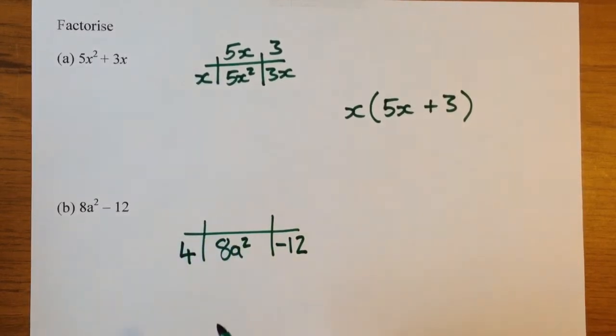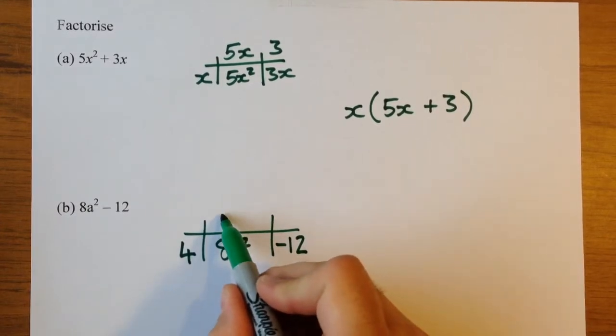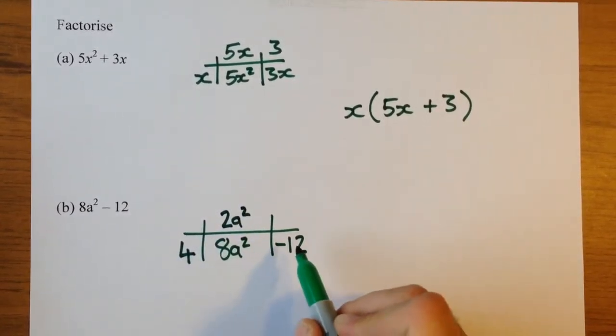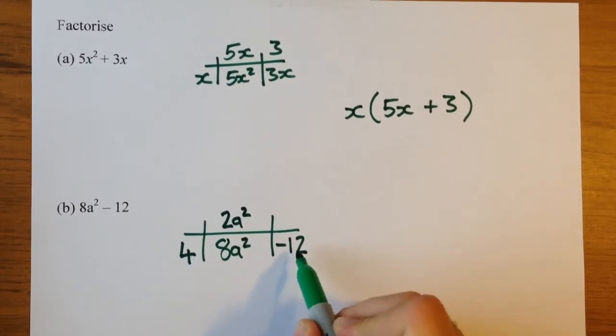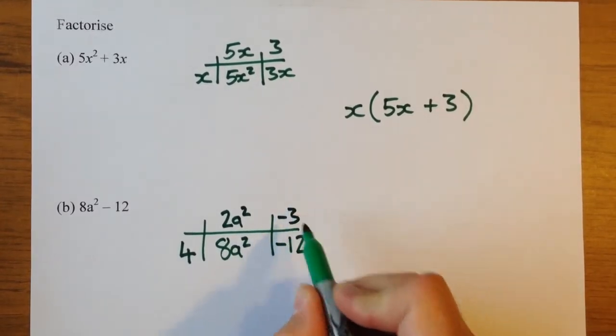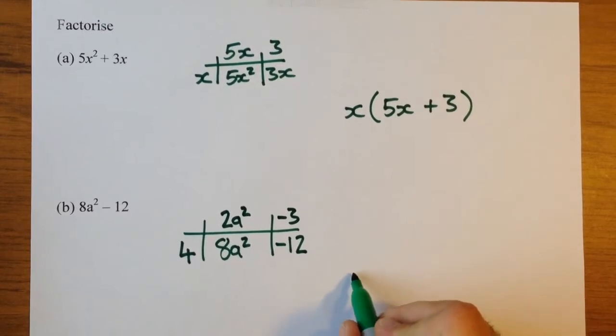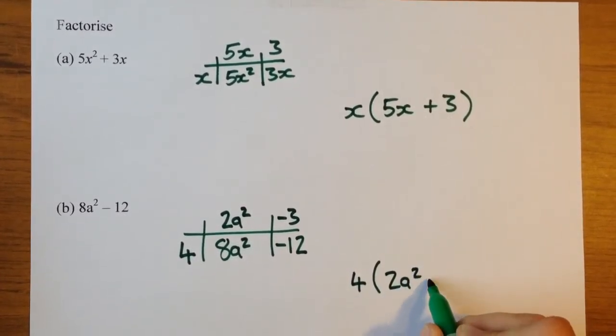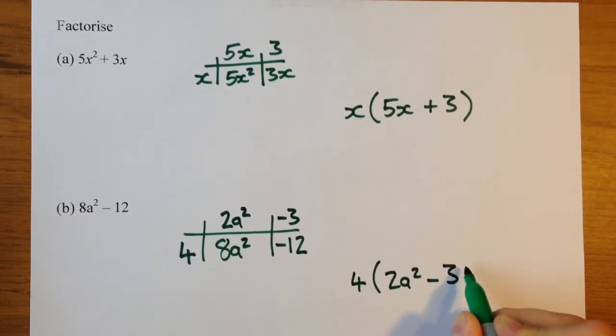So 4 multiplied by what gives you 8a squared? That would be 2a squared. And 4 multiplied by what gives you negative 12? That would be negative 3. So the final answer would be 4 bracket 2a squared minus 3.